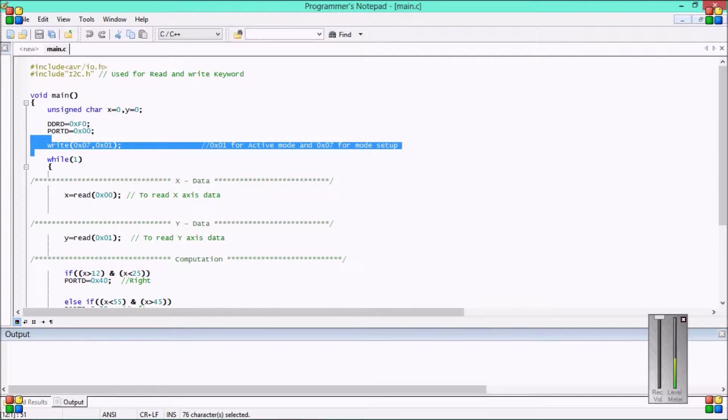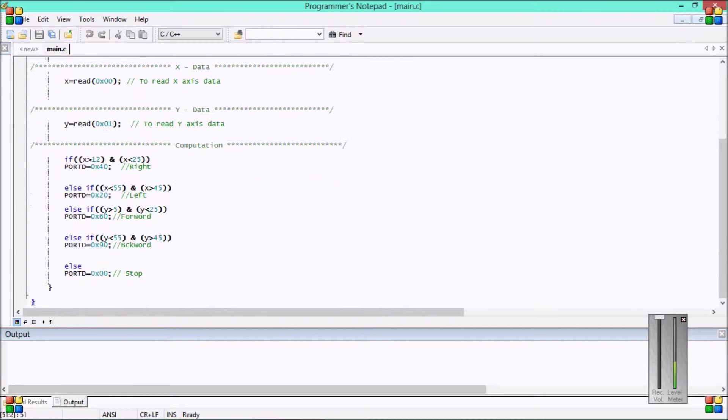Now, write 0x07. This is used for determining the mode, for changing the mode. And this 0x01 is responsible for active mode. So I have made it to active mode so that our robot can be controlled by acceleration sensor. By this, I have made acceleration sensor to active position. While 1, this is for infinite loop. Now, this statement is used for reading the x-axis location. 0x00 is used to read the x-axis location. And 0x01 is used to read the y-axis location. Because the acceleration sensor works on the tilted axis.